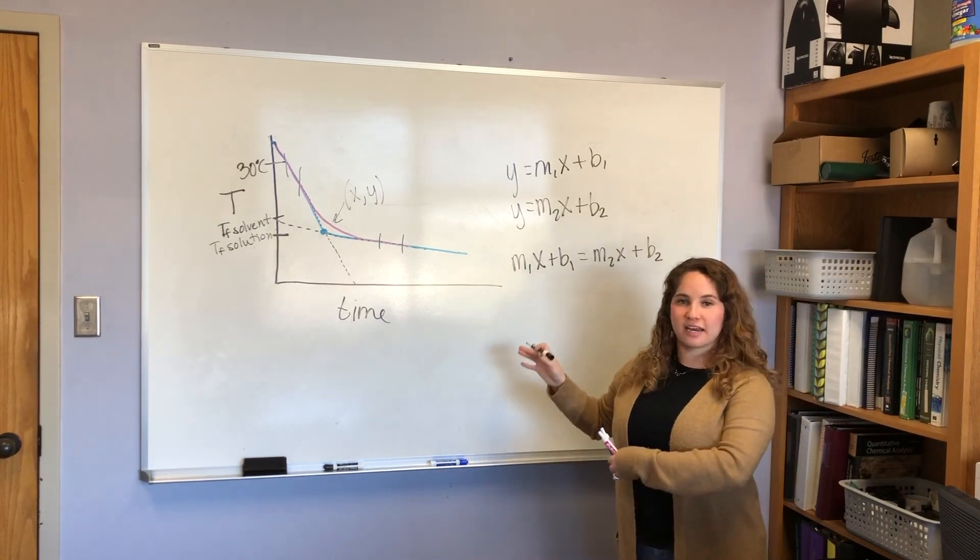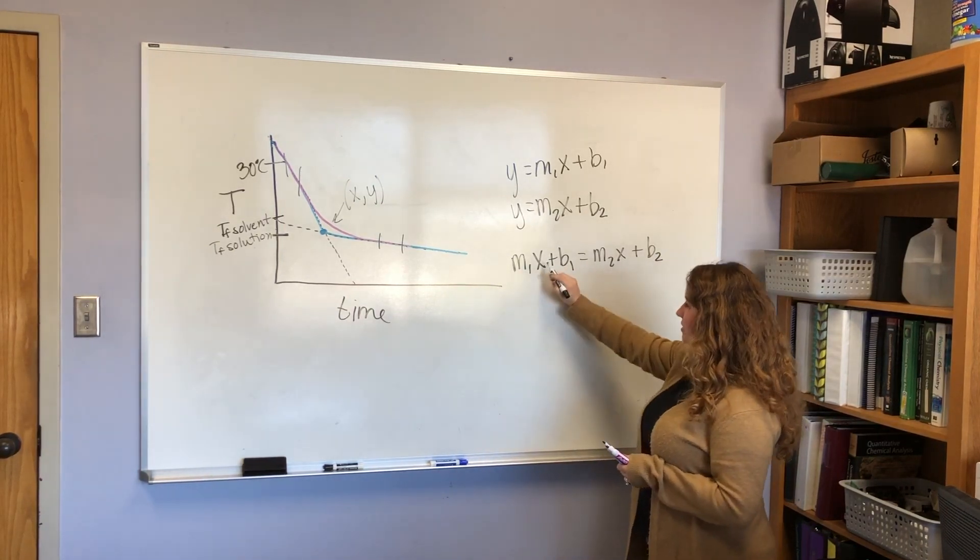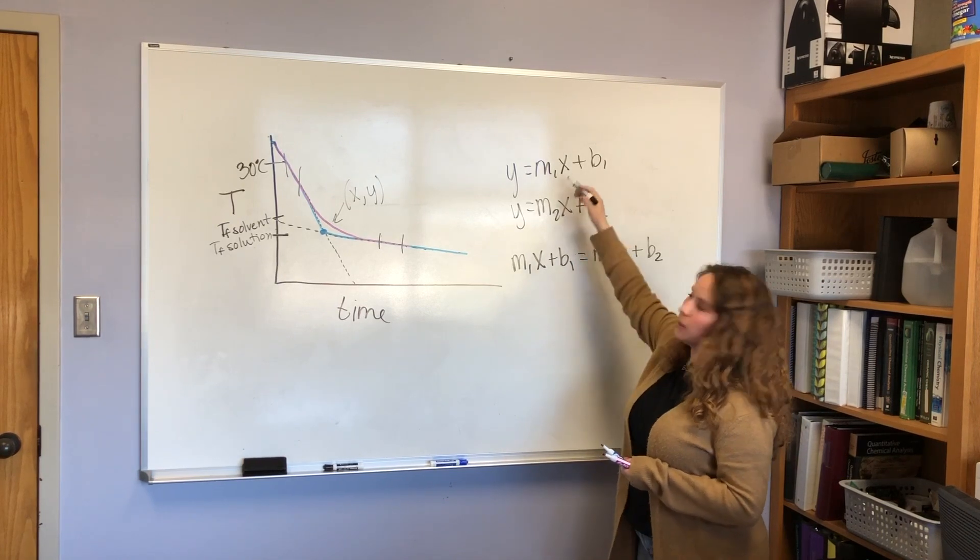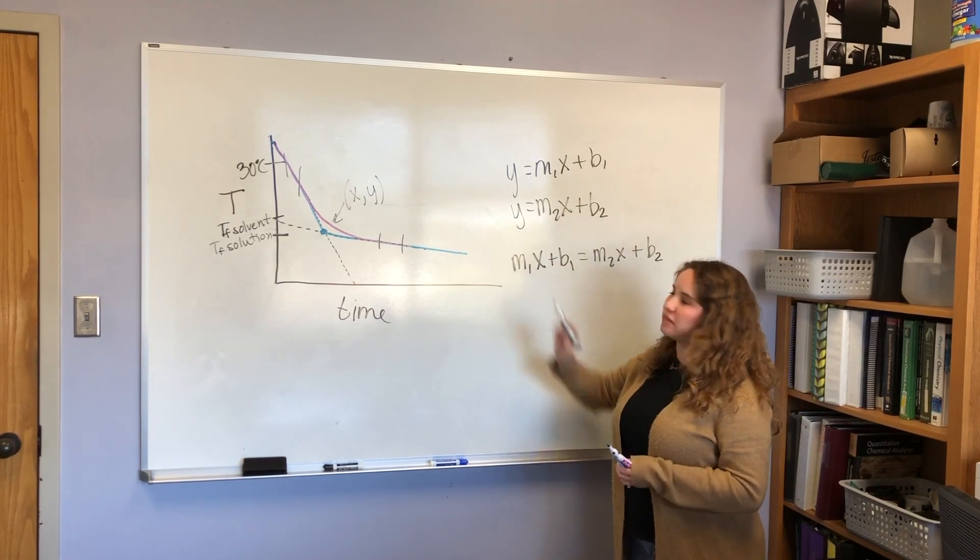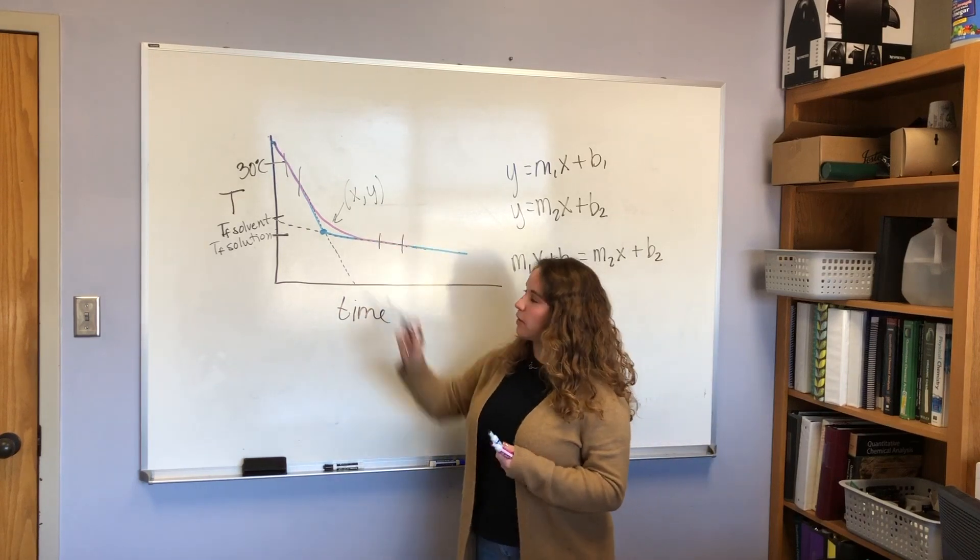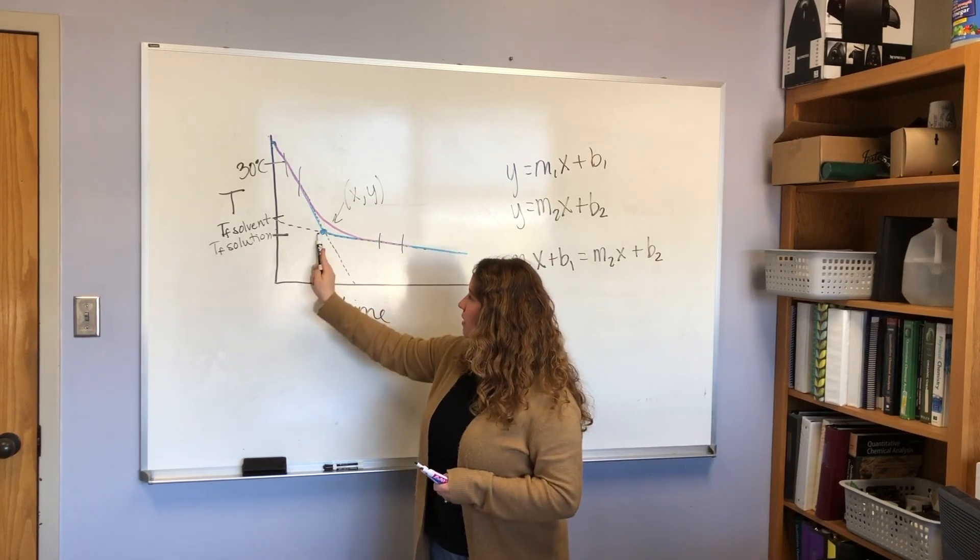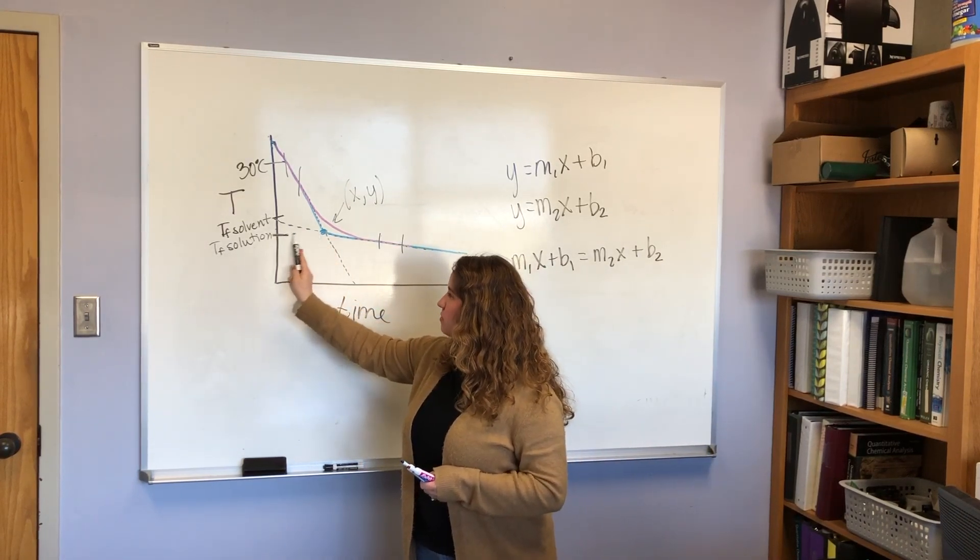I'm first going to have to set my two equations equal to each other and solve for x. So then once you've isolated x, you can take that x value, plug it into either one of these, and find out what the value of y would be. That gives you your x, y coordinate, and then you can figure out what that freezing point is.